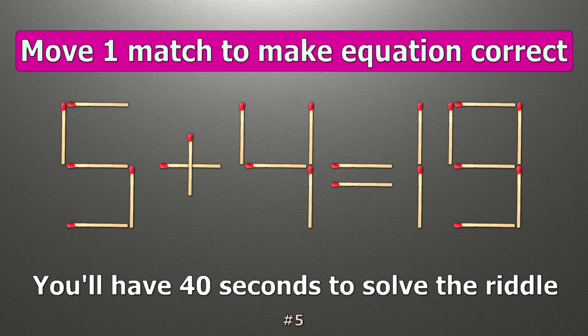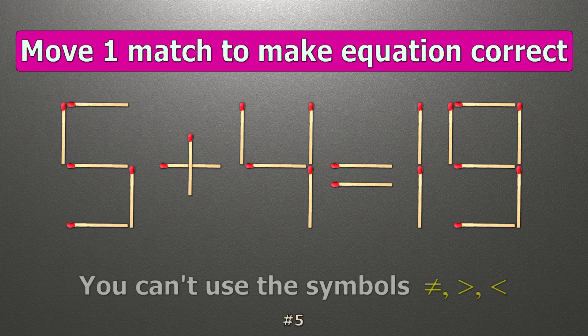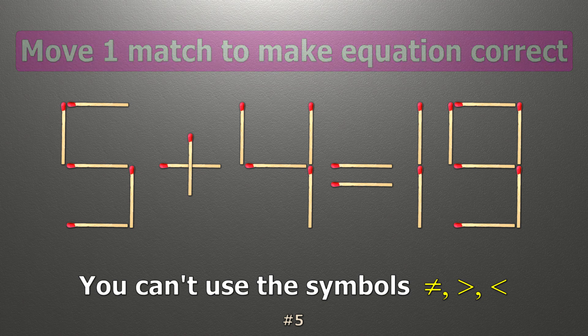We have the equality 5 plus 4 equals 19. Our equality is wrong. We need to move one match to make our equality correct.